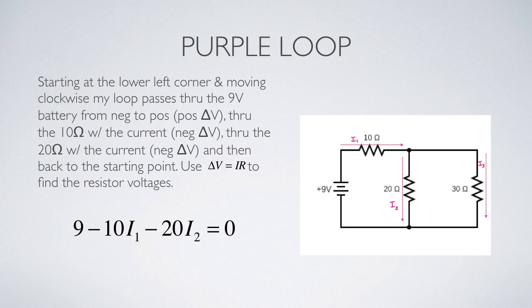I go through the 10-ohm resistor with the current, so I call that minus 10I₁. Then I turn the corner and go through the 20-ohm resistor with the current, so I call that minus 20I₂. Then I turn the corner and head back, and I'm where I started, so I write equals zero. The potential differences across the resistors were written by the fact that ΔV equals IR in a resistor.